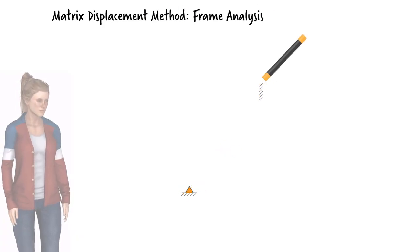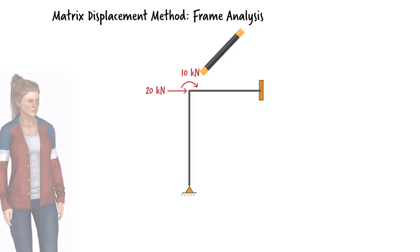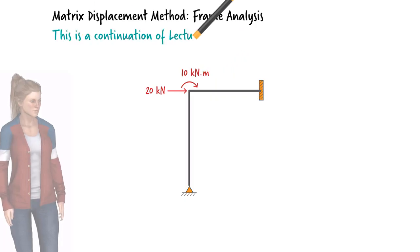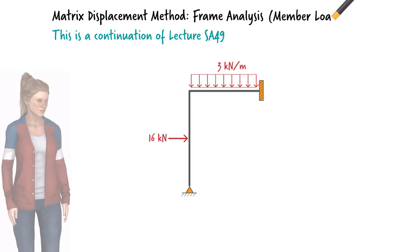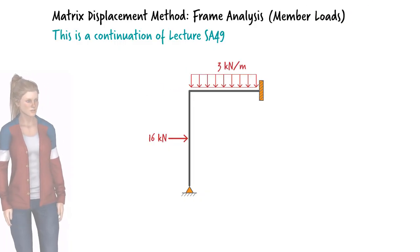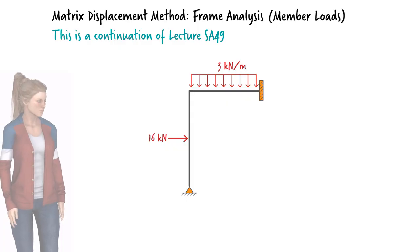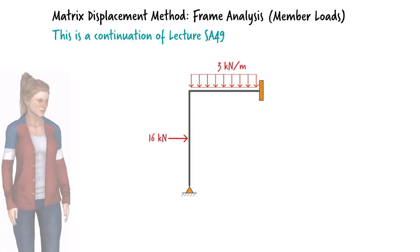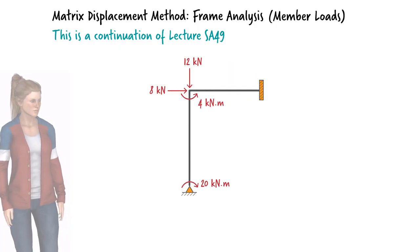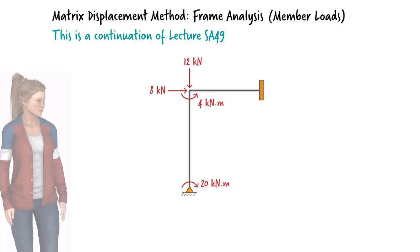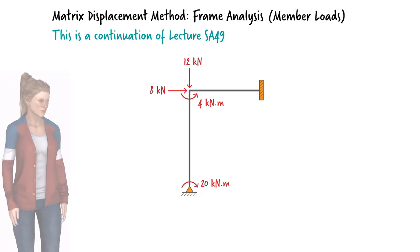We presented the matrix displacement method for analyzing frames subjected to joint loads in the previous lecture. Here we are going to see how the method can be used to deal with member loads as well as joint loads. The overall strategy for handling member loads is rather straightforward. We are going to replace them with their equivalent joint loads, then we analyze the frame as was described previously in lecture SA49.